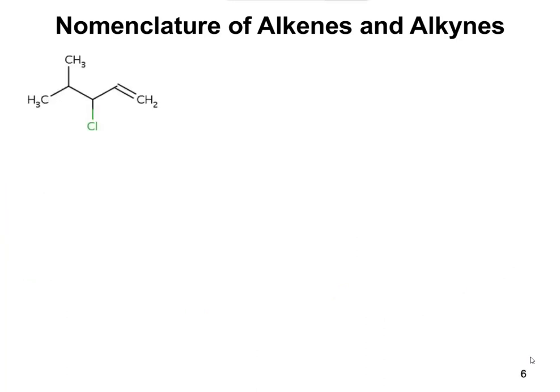Here are a couple more examples. For this particular case, I wanted to include something that had a halogen, because we haven't done any naming with a halogen yet. Nothing really changes in terms of what we're doing — we still need to find the longest parent chain that includes the multiple bond. This time, the halogen — in this case, that chlorine in green — is going to be one of the substituents. So finding the longest parent chain, we're going to start over there, come here, and include one of those CH3s. It doesn't matter if we draw that up or down.